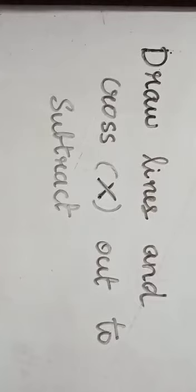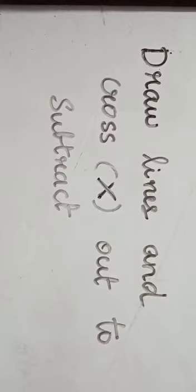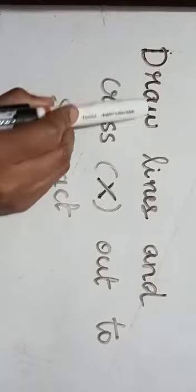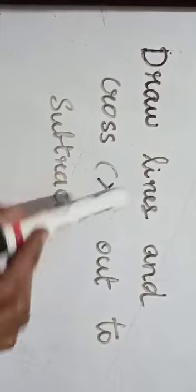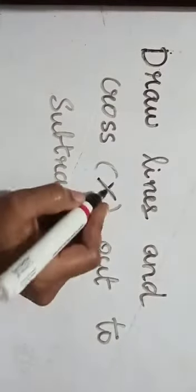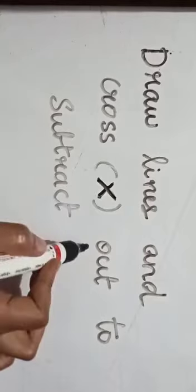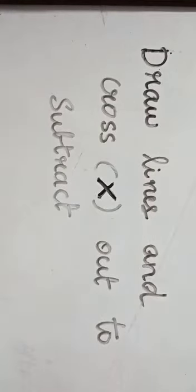Good morning children. In the last class we studied vertical subtraction — drawing numbers in an up-down direction. Today we are going to study how to draw lines and cross them out to subtract. We are going to draw lines and cross them out — this is a simple method of crossing out to subtract.